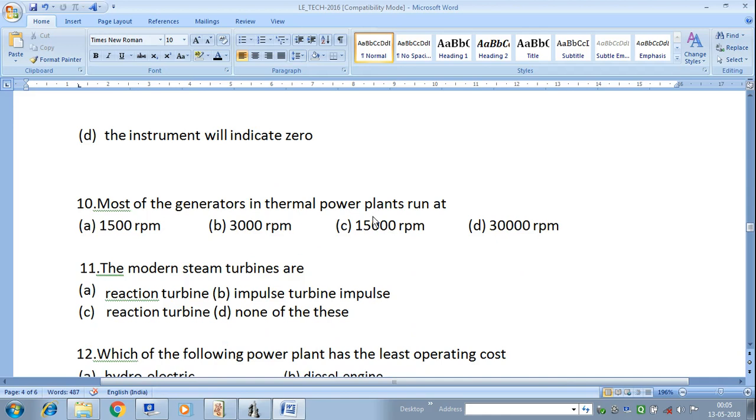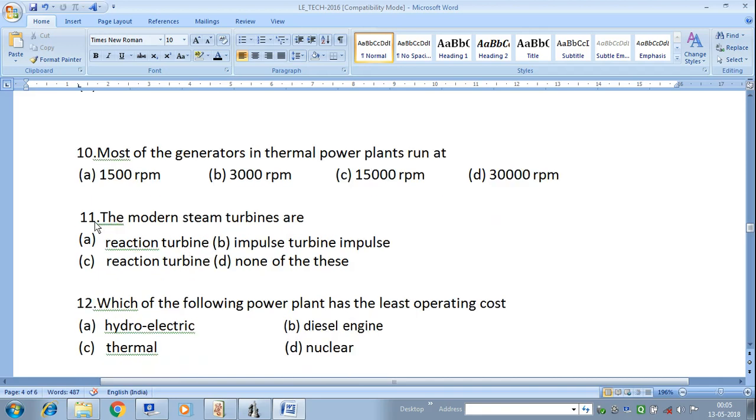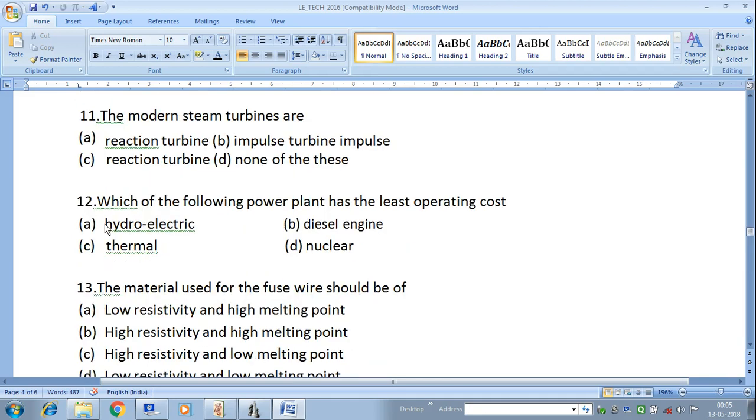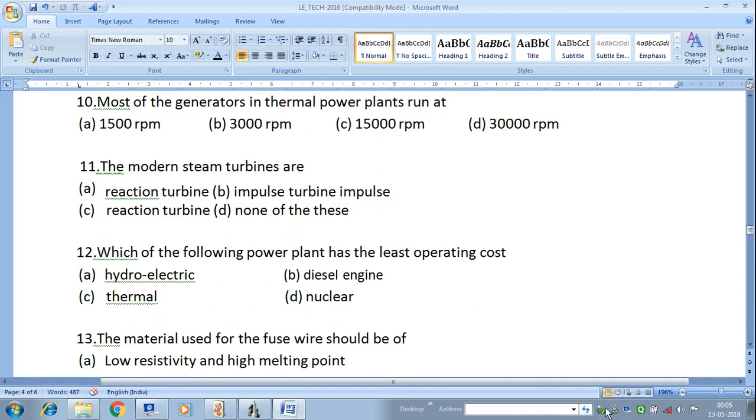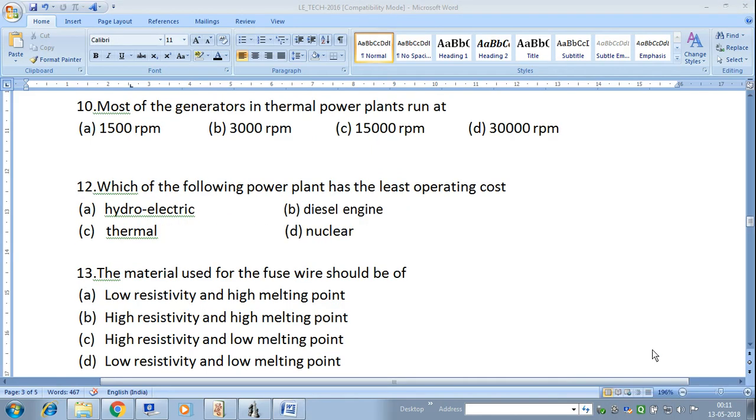Next question: Most of the generators in thermal power plant runs at 3000 RPM. This is the correct answer. Next question: Which power plant has the least operating cost? Generally, hydroelectric power plant has the least operating cost.